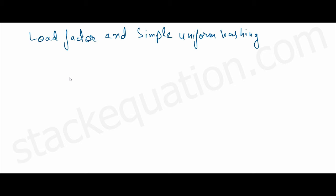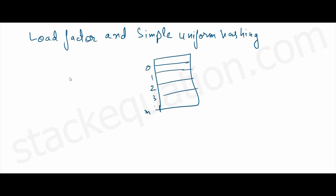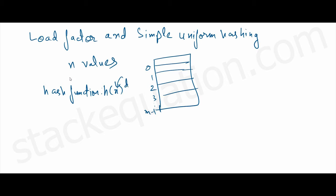In this video we'll discuss load factor and simple uniform hashing. If we have a table with m indices starting from 0, 1, 2, 3 up to m minus 1, and we have n values we want to store across those m slots, we use a hash function to determine which value gets stored at which index. We pass a data value as a parameter to the hash function and it returns an index, and we store the data at that particular index.